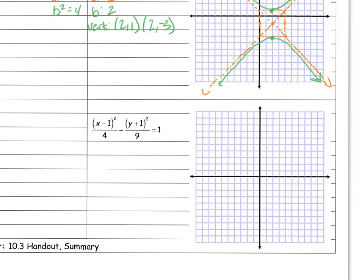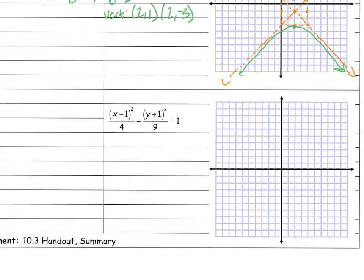Last problem — same thing again. I need to find my center. My x term is 1 and my y term is negative 1, so my center is at (1, -1). Then a squared equals 4 so a is 2, and b squared equals 9 so b is 3. I'll go ahead and draw in my rectangle and asymptotes — center at (1, -1), a is two each side, b is three up and down.